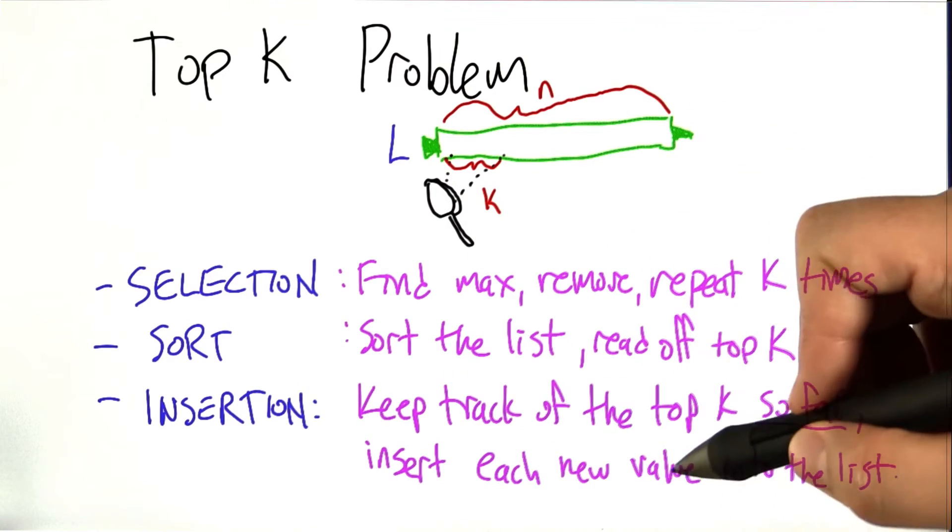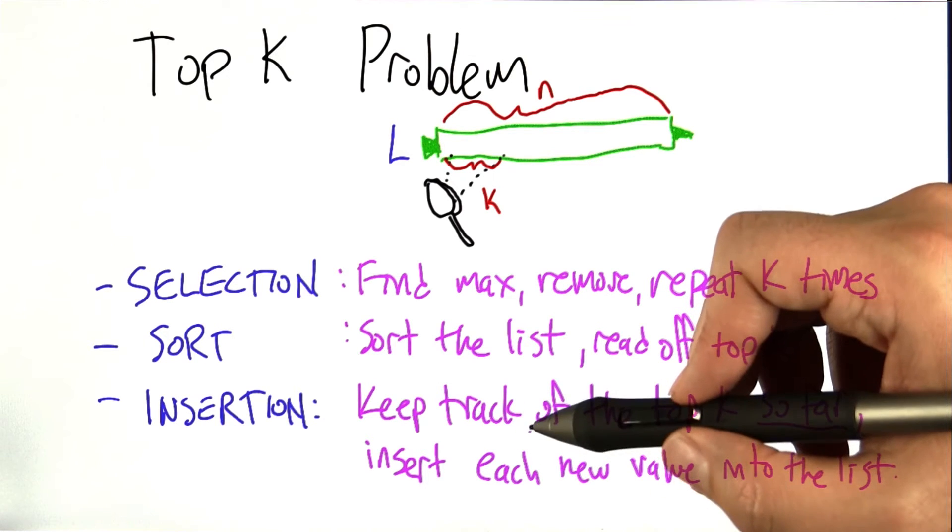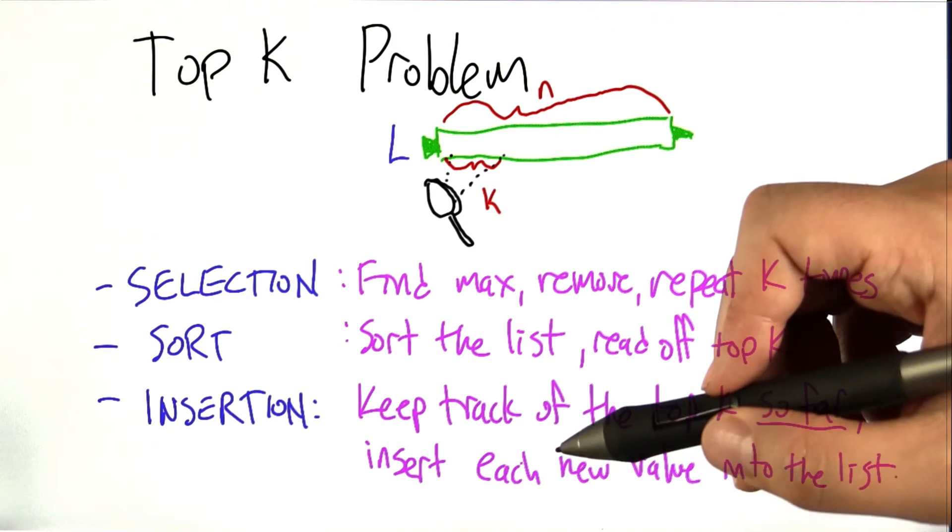And each new element of the list that was encountered, figure out where it would fit into that top 2 list. If it was smaller than both of those, ignore it. If it's bigger than both of those, put it at the top of the list and bump the list down, and so forth.